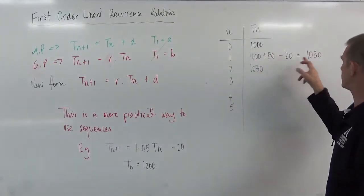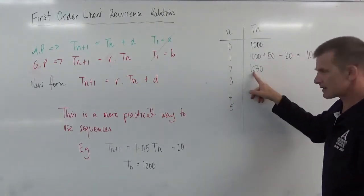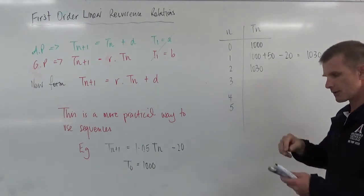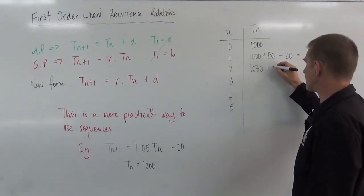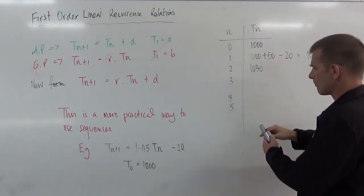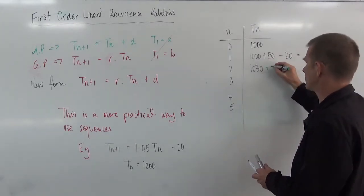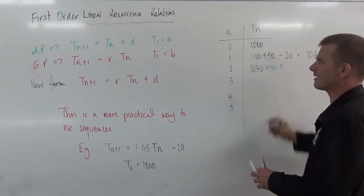So here we go. 1,050 minus 20, 1,030. That's my next starting number. So then the next line would be plus, now it would be 51.5. Now, you might go, we can't work with that. We can't really.